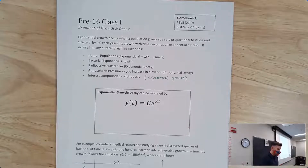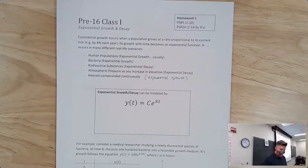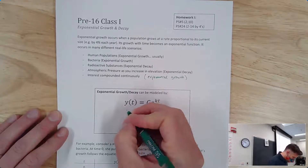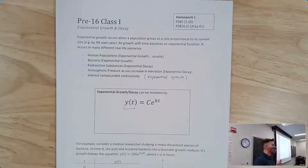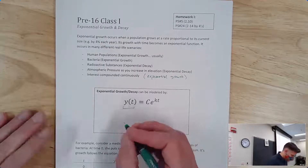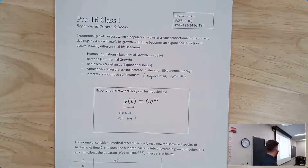Here is one version of the exponential growth and decay model. There is another way of writing this equation worth mentioning, especially for those in the 17th series. This equation is very similar to the continuously compounded interest equation. A(t) represents the amount of stuff — people, bacteria, radioactive substance, atmospheric pressure, etc.